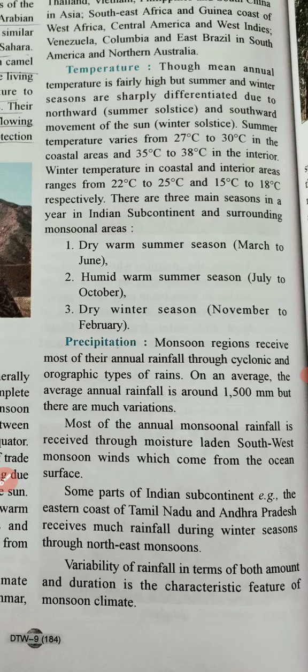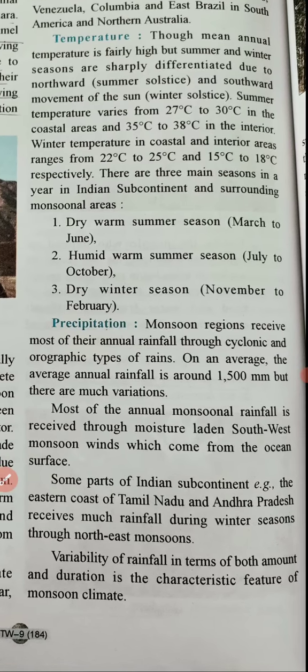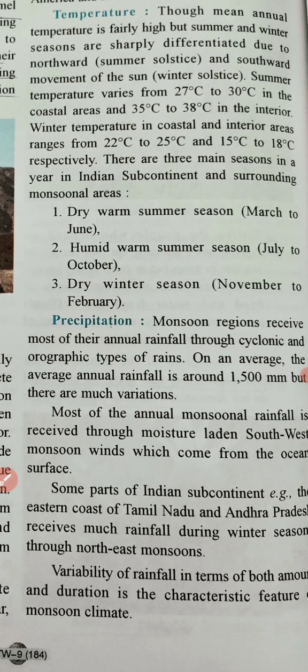Orographic rainfall occurs when southwest monsoon winds strike the Western Ghats — they rise upward and shed their moisture. Cyclonic rainfall occurs when there is a depression in the Bay of Bengal, attracting winds from the inland. On average, the annual rainfall is around 1500 mm, that is about 150 cm.